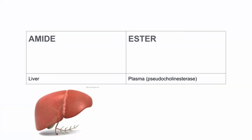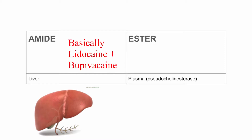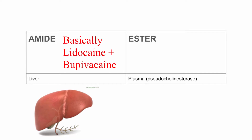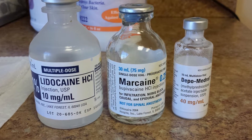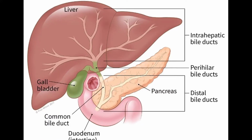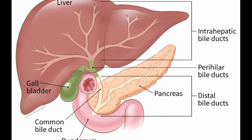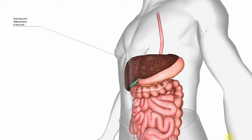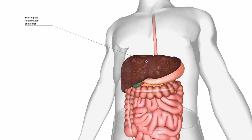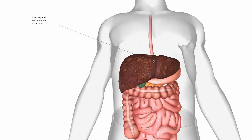Local anesthesia is broken down into amides or esters. Amides are by far the most common type of local anesthesia that you will be using in foot and ankle surgery. Amides are broken down in the liver whereas esters are broken down in plasma by pseudocholinesterase. You must memorize that amides are broken down in the liver. It has a theoretical clinical application for patients with hepatotoxicity or other conditions of the liver.